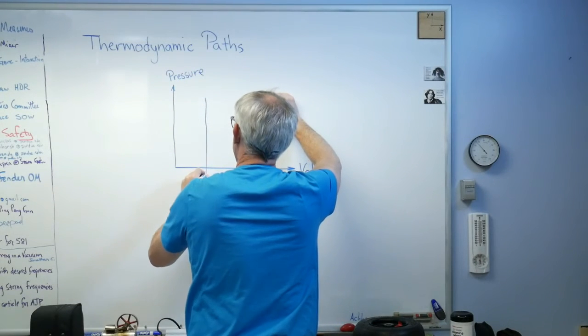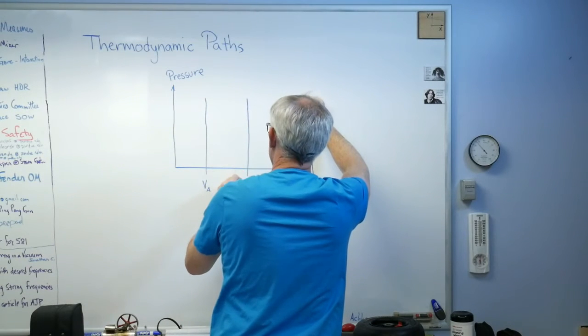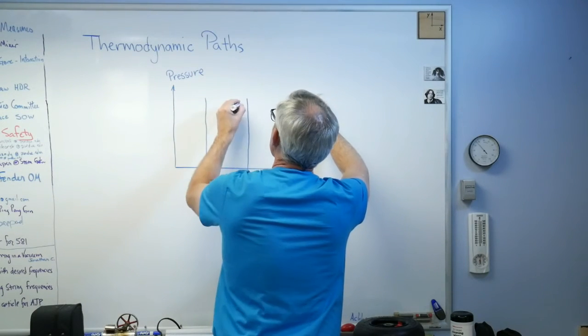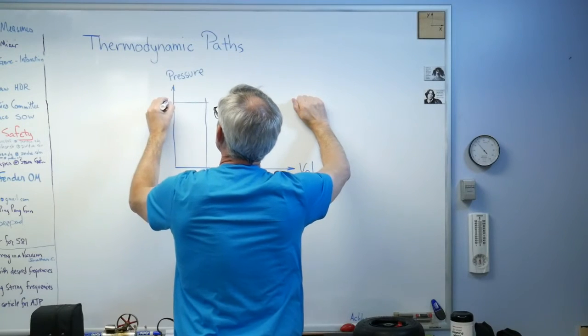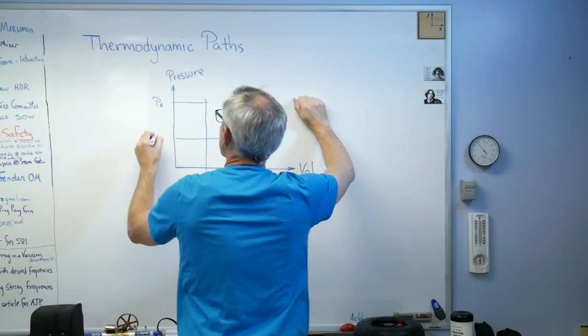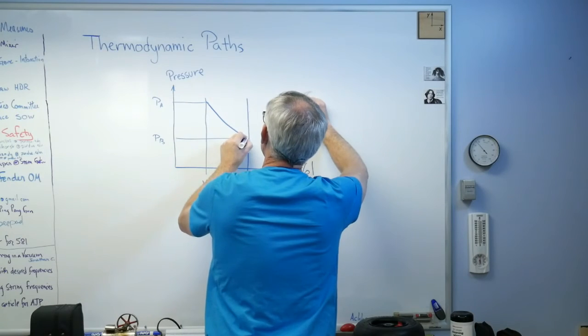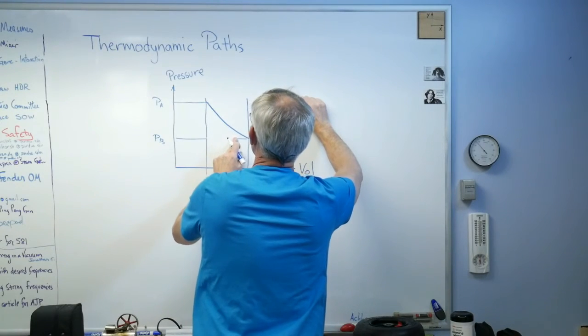And so I want to go from an initial volume Va to a final volume Vb, an initial pressure Pa and a final pressure Pb. That's what it looks like. I'm going to get rid of that right there.